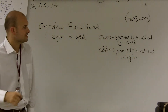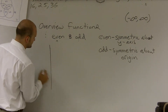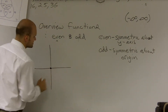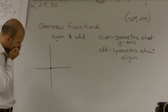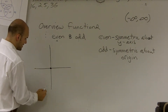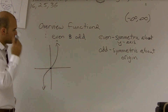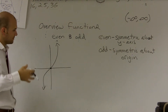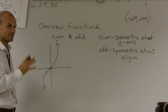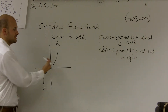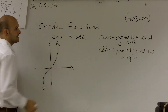An odd function is symmetrical about the origin. If you guys remember, the origin is right where the x and the y-axis come together. A classic example of that is our cubic function. One way to show whether it's symmetrical about the origin is to reflect it about the y-axis and then reflect it about the x-axis — or you can reflect about the x and then reflect about the y.